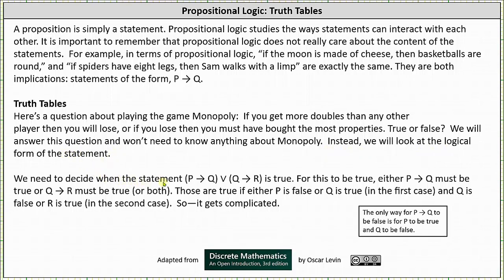We need to decide when the statement 'if p then q, or if q then r' is true. For this to be true, either 'if p then q' must be true, or 'if q then r' must be true, or both. Those are true if either p is false or q is true in the first case, and q is false or r is true in the second case.